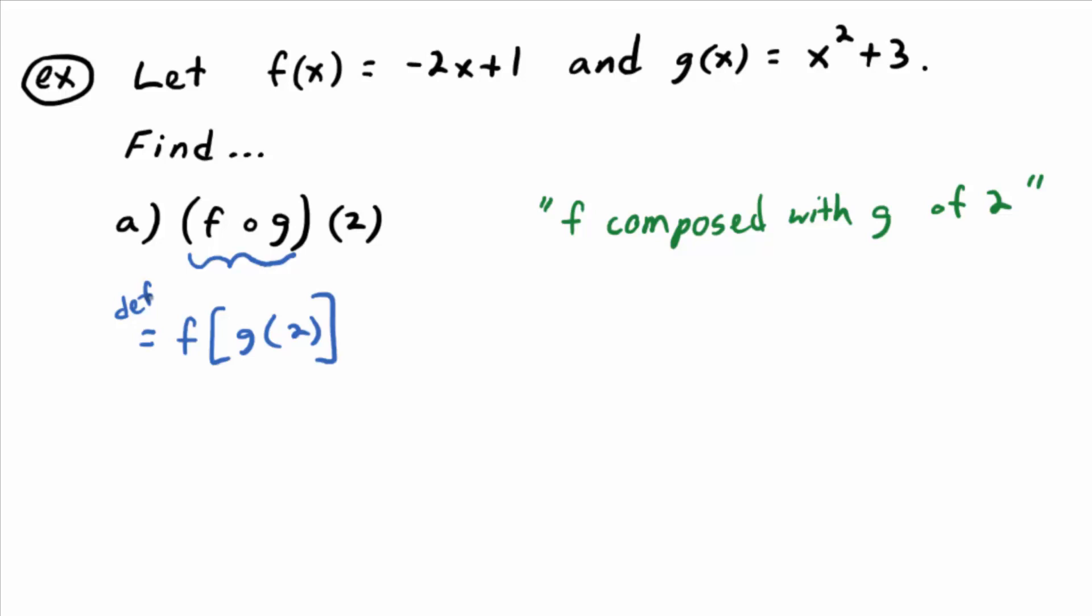So now work it from the inside out. G of 2 is a number, right? So think about the function g. Here's the formula for the function g. What would, a little scratch work here, what would g of 2 be equal to? We know how to do that. So you plug, that means, this notation means, hey, just wherever you see an x in the formula for g...